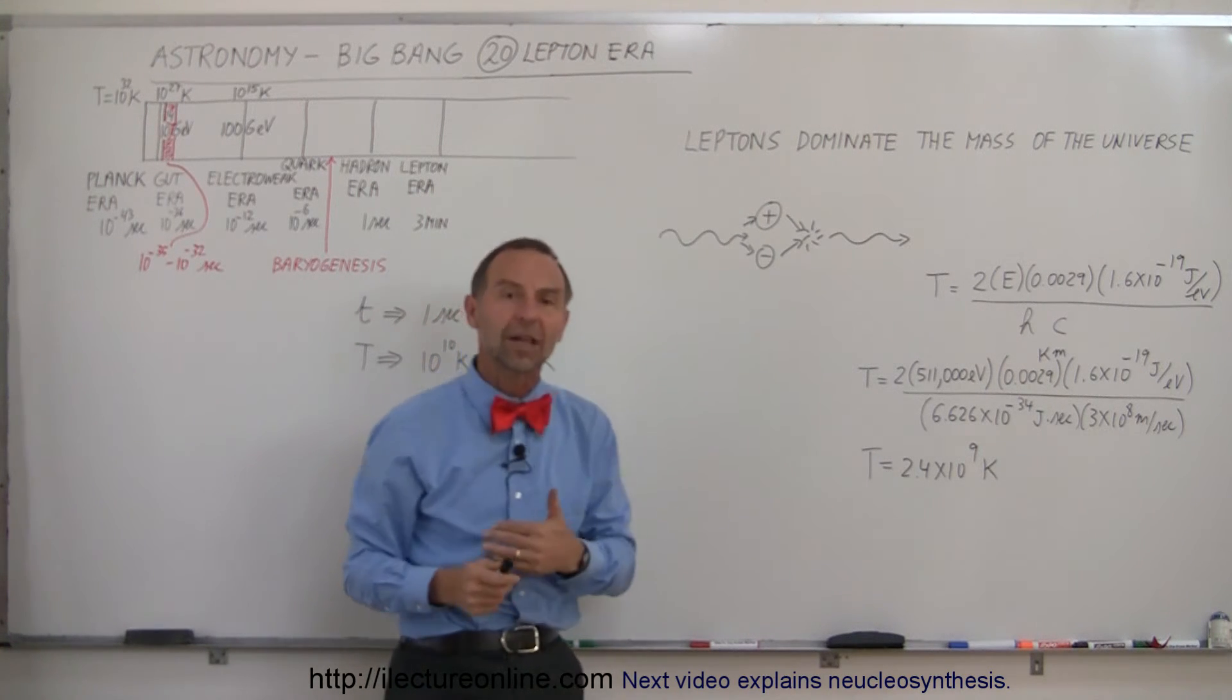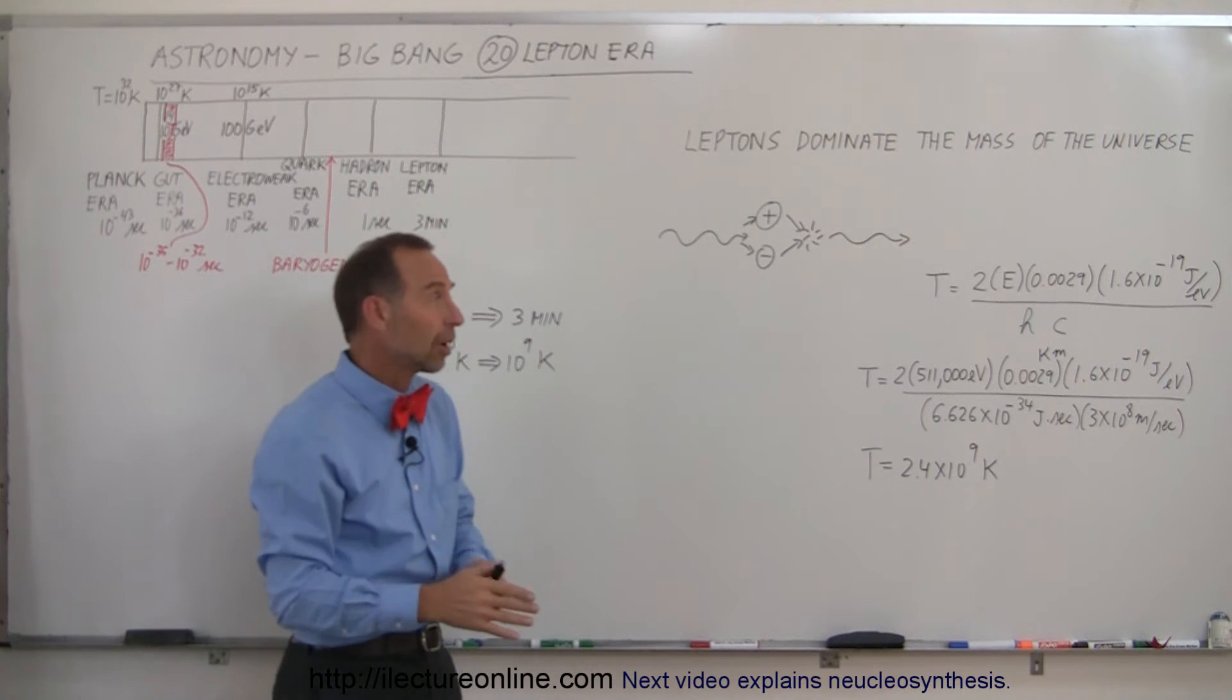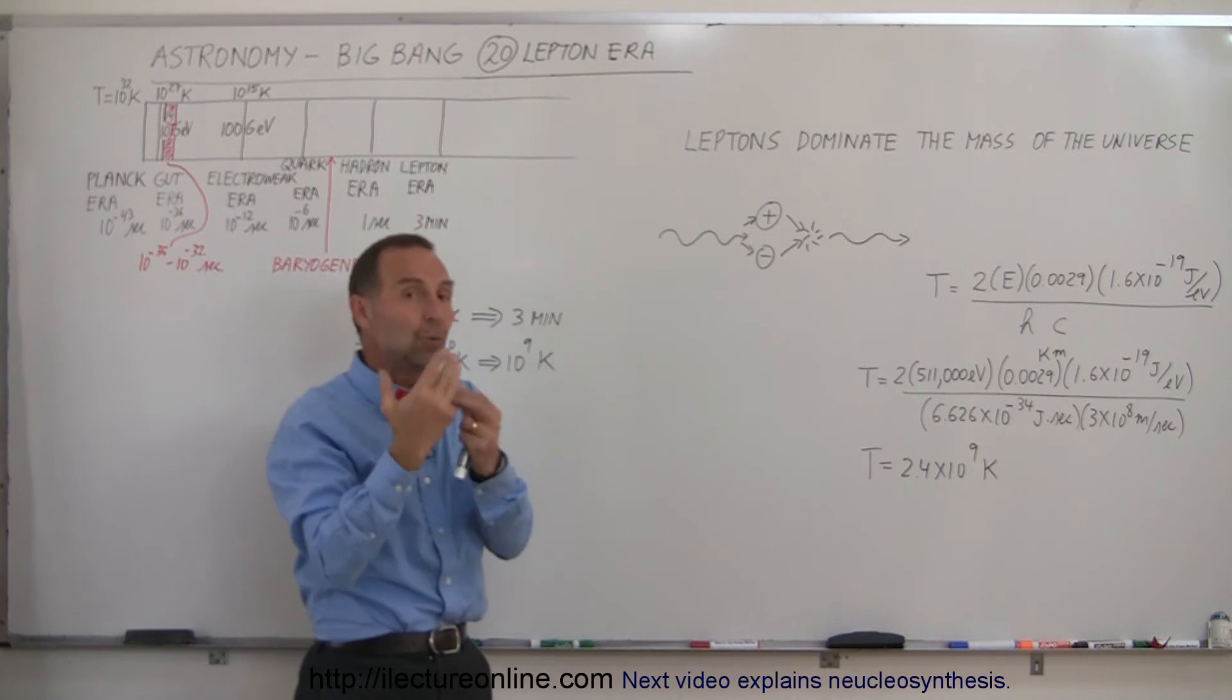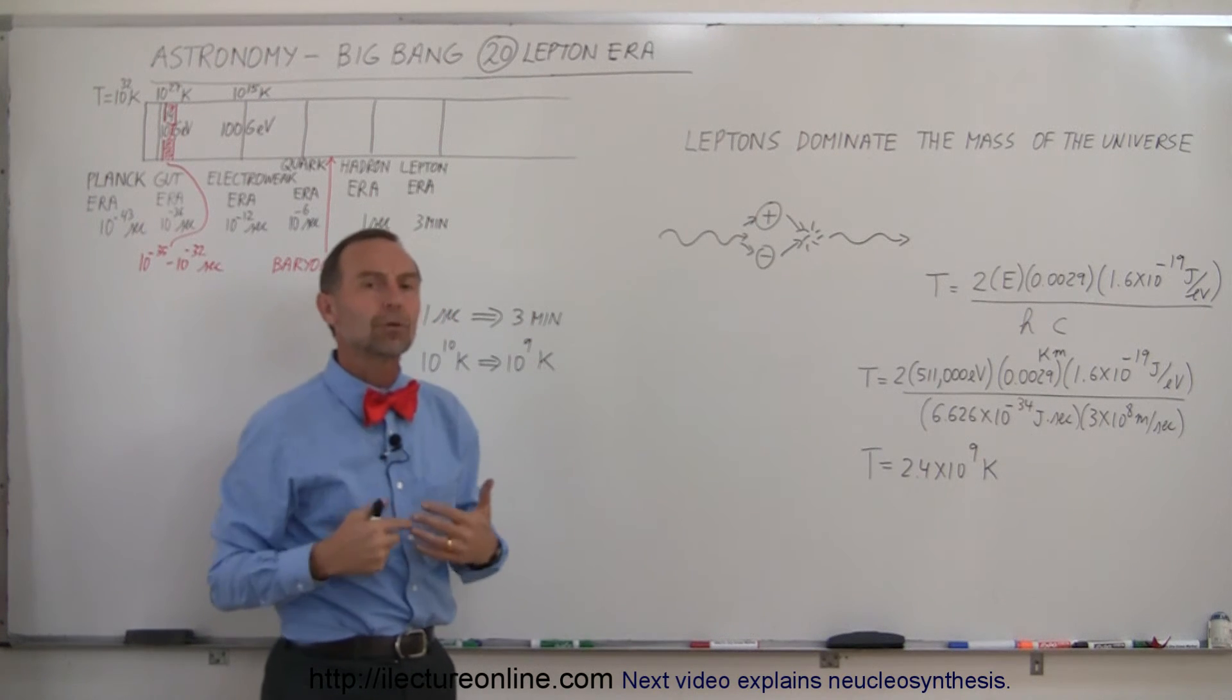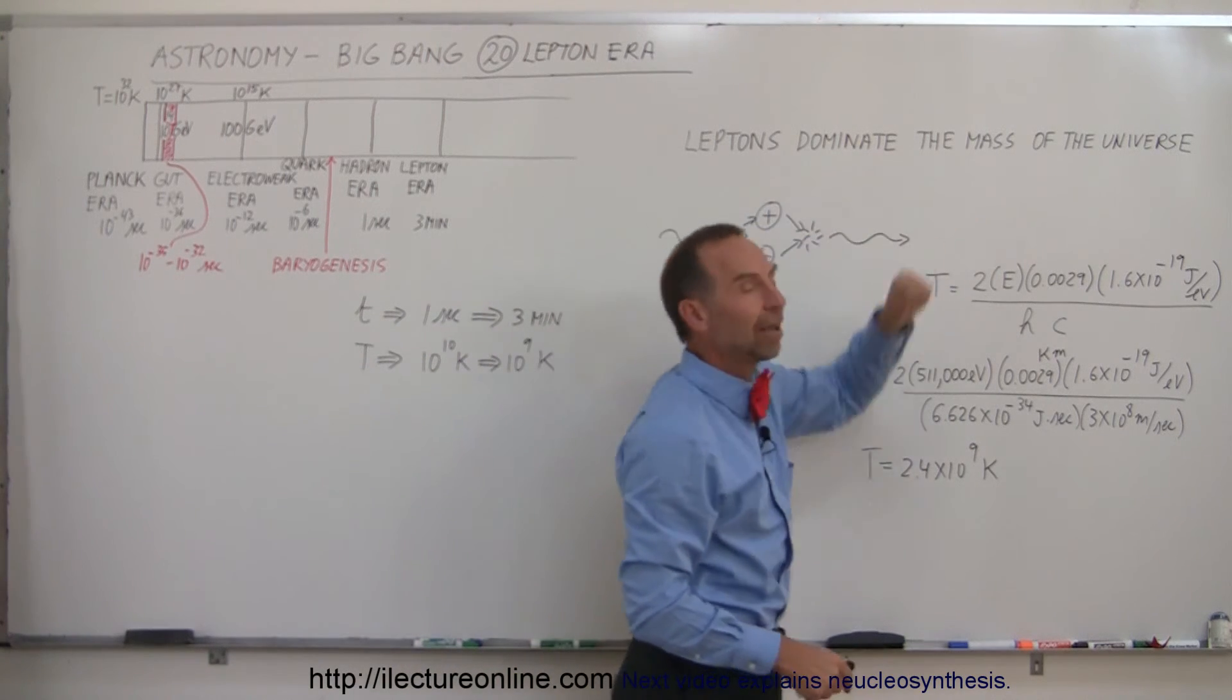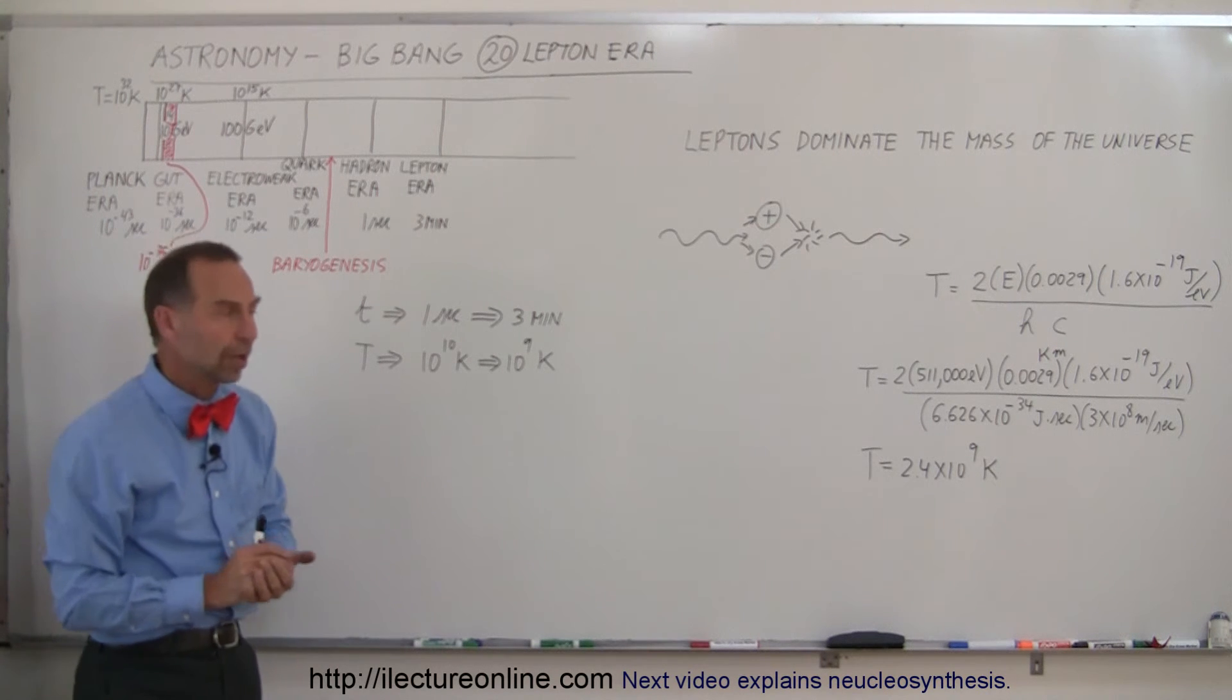Of course, today that's not the case because a neutron and a proton has a mass of about 2,000 electrons, but back then there were billions of electrons for every one neutron and every one proton, that their mass far exceeded the mass of the protons and neutrons. So we say that at that time, the leptons dominated the mass of the universe.